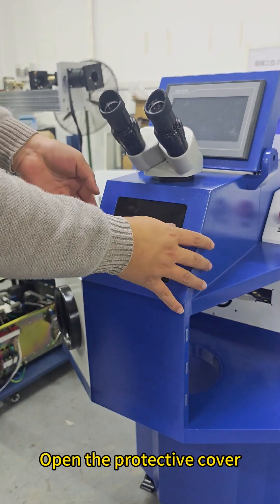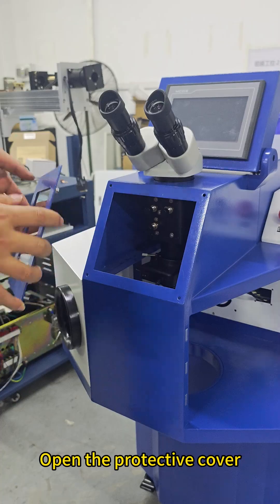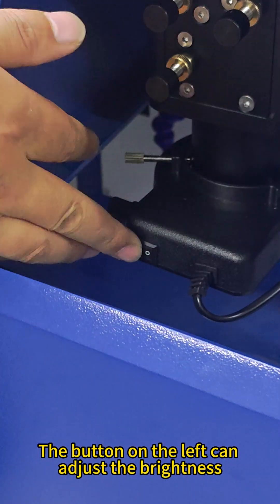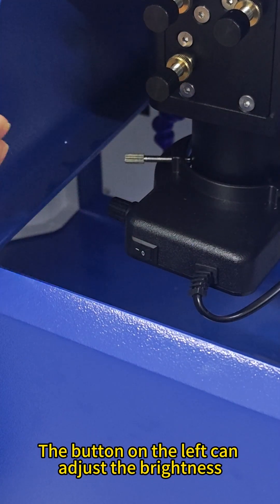Open the protective cover. Turn on the lighting switch. The button on the left can adjust the brightness.